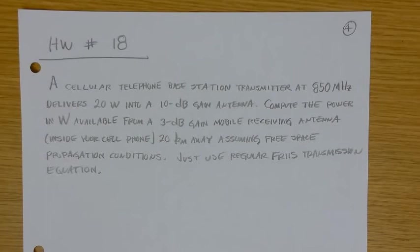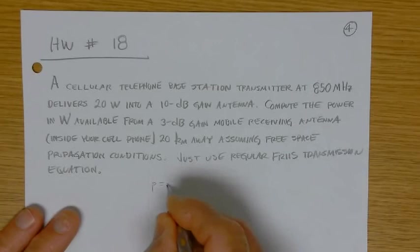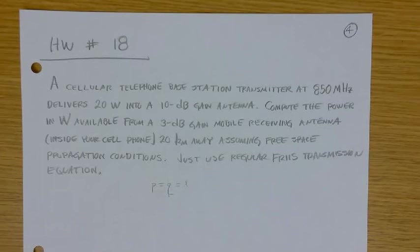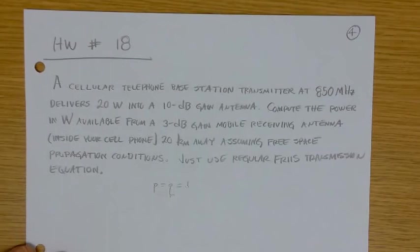A cellular telephone base station transmitter at 850 megahertz delivers 20 watts into a 10 dB gain antenna. Compute the power in watts available from a 3 dB gain mobile receiving antenna inside your cell phone 20 kilometers away, assuming free space propagation conditions. So here we're assuming P and Q are 1. All right, let's see if you can compute that. That's pretty straightforward. It's going to get you up to speed.